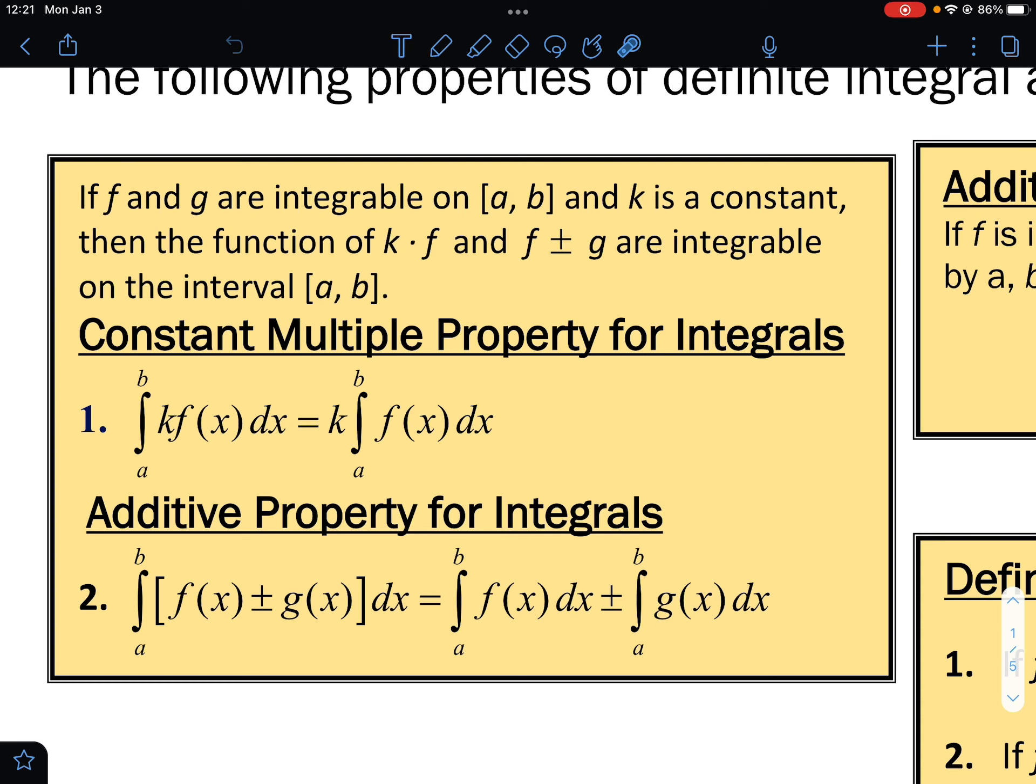The additive property for integrals says if we are integrating two functions that are adding or subtracting inside the integrand, we can simply split that integrand up into two separate integrals. The first one of the first function F, plus or minus the second function G.